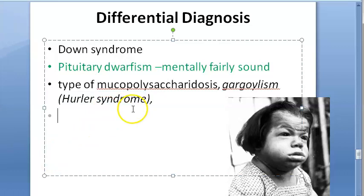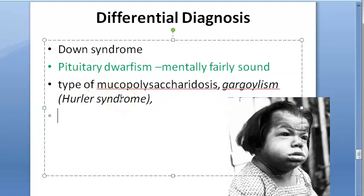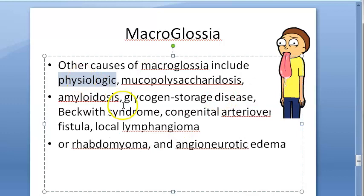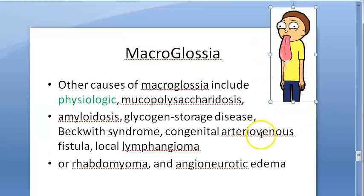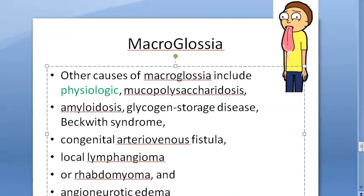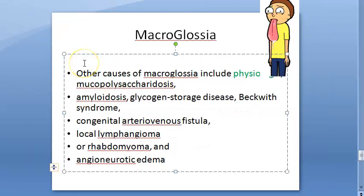Down syndrome is trisomy 21 and has many well-known features. In Down syndrome and Hurler syndrome, both mental and growth retardation can occur. Macroglossia itself has many other causes, including amyloidosis, Beckwith syndrome, physiologic causes, mucopolysaccharidosis, glycogen storage disease, congenital arteriovenous fistula, local lymphangioma, rhabdomyoma, and angioneurotic edema — cretinism being one cause among many.